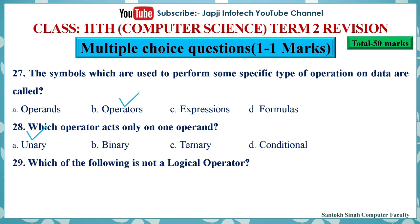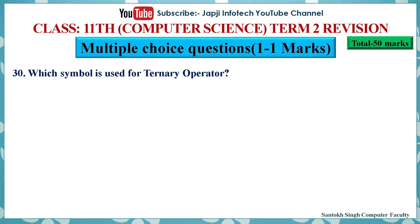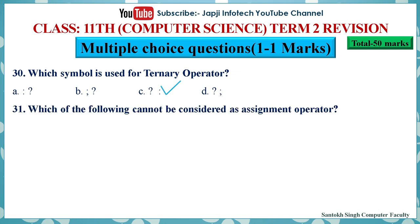Question 29: Which of the following is not a logical operator — options are AND, OR, equality, or NOT. The right answer is equality. Question 30: Which symbol is used for the ternary operator — the right answer is question mark colon (?:). Question 31: Which of the following cannot be considered as an assignment operator — options are =, ==, +=, or %=. The right answer is == (double equal) which cannot be considered as an assignment operator.